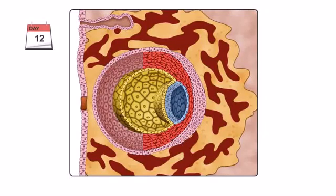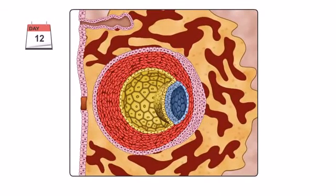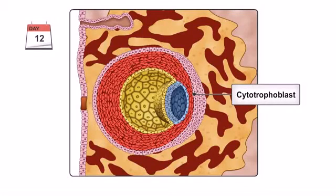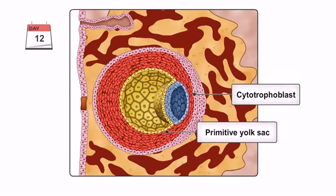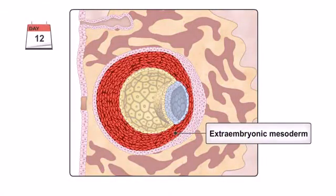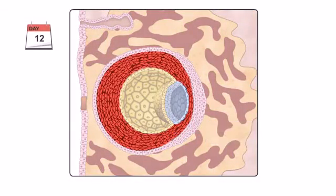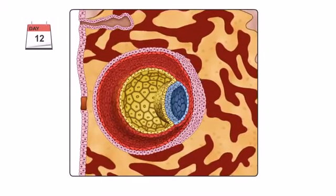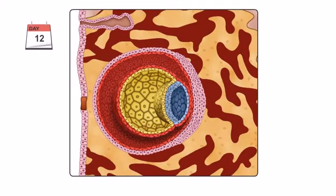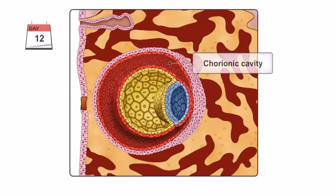Around the same time, a new population of cells appear between the inner surface of the cytotrophoblast and the outer surface of the primitive yolk sac, known as the extraembryonic mesoderm. Large cavities begin to appear in the extraembryonic mesoderm. These gradually fuse to form one single cavity, called the chorionic cavity.